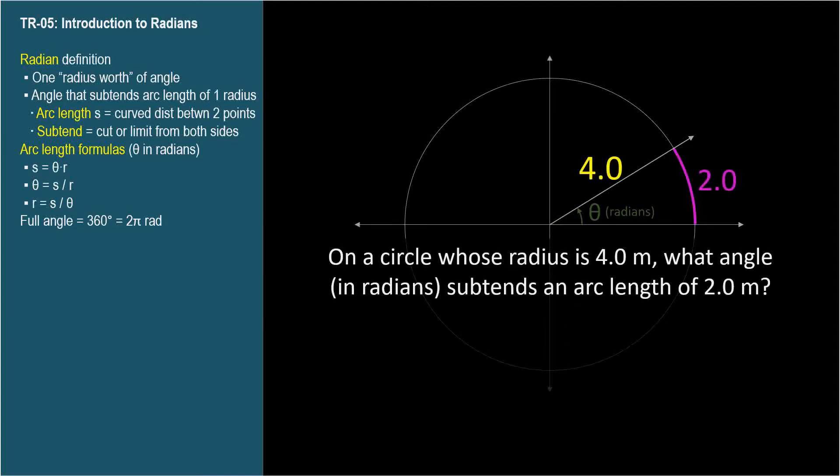Let's try a problem. On a circle whose radius is 4.0 meters, what angle in radians subtends an arc length of 2.0 meters? Write down the arc length equation, whichever one you chose to memorize. Since we're asked to find an angle, let's rewrite the equation in terms of theta. Plug in our values for arc length and r, and we get an angle of 0.50 radians. Note from the picture that the arc length is half the radius, so the angle is half a radian.